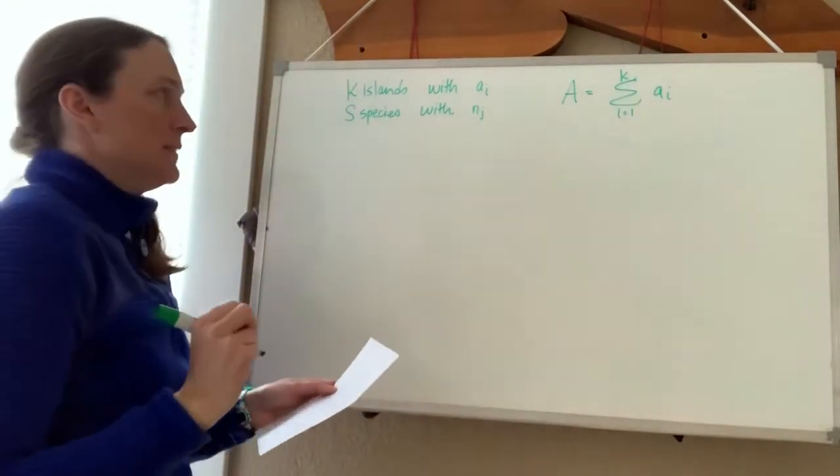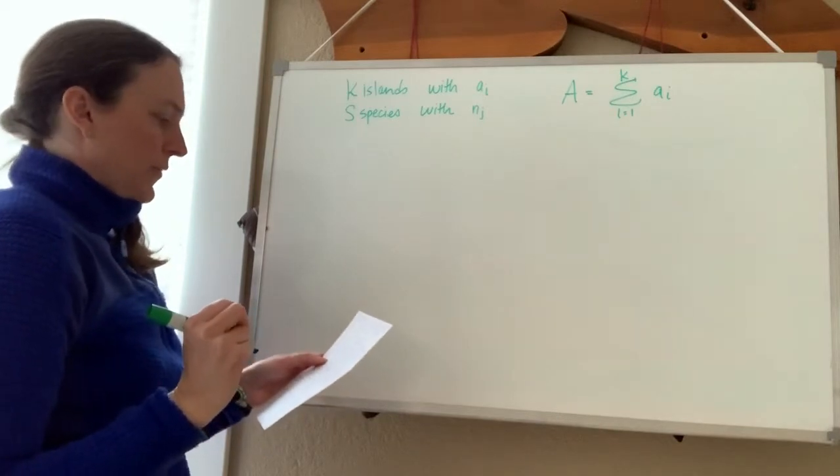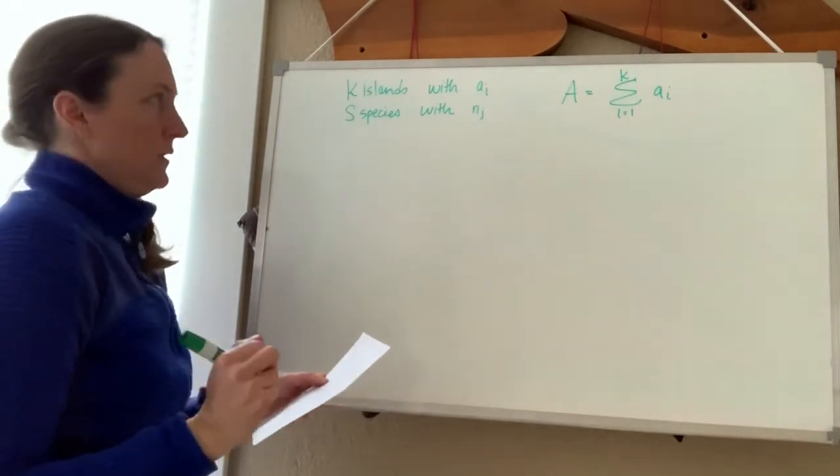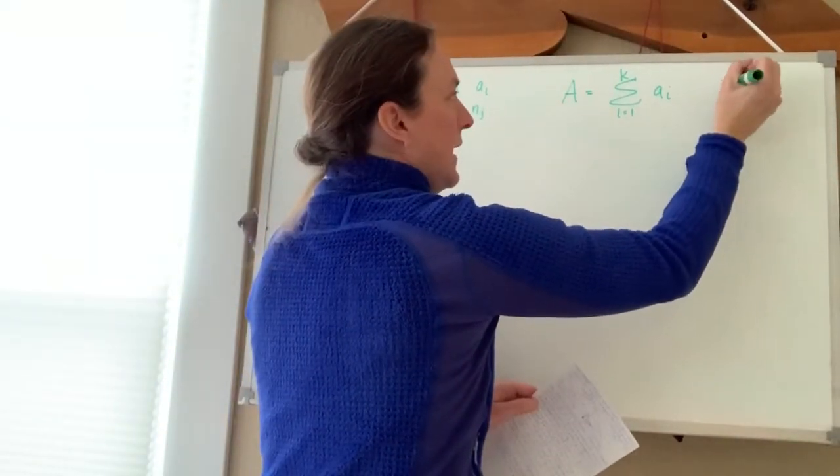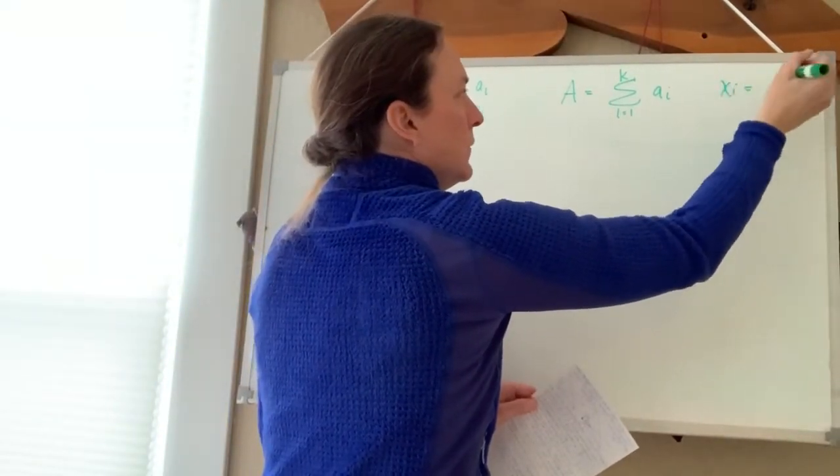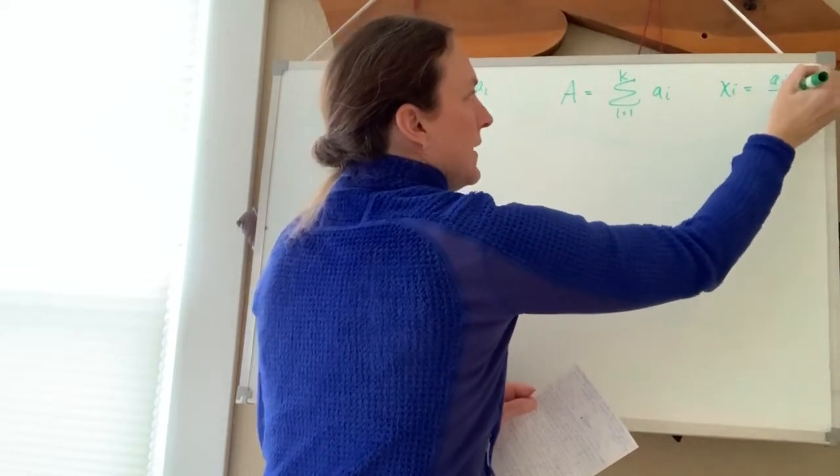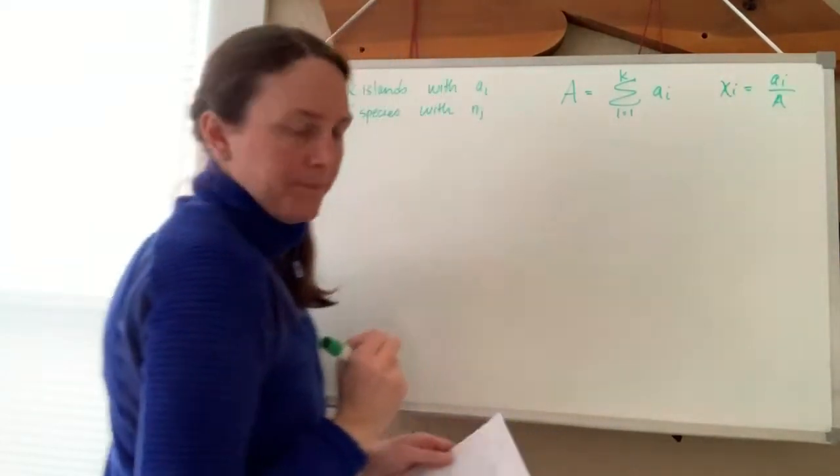And if we wanted to figure out what the relative area of each island was, we could call that x_i, which would be every a_i divided by A, the big A.